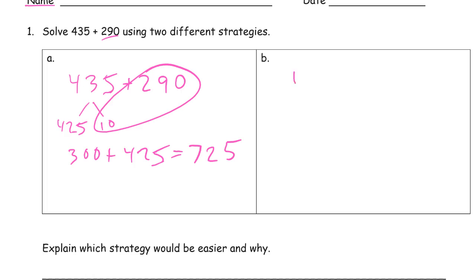And, if I add these vertically, our ones digits first: 5 plus 0 is 5, 3 plus 9 is 12. Compose 100, two tens left behind. 4 plus 2 is 6, and one more is 7 for 725.